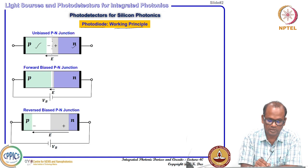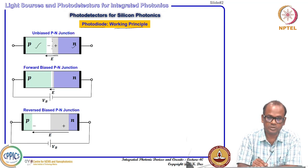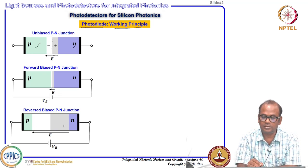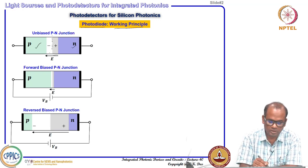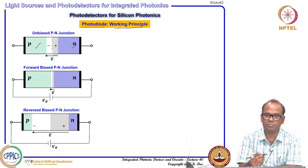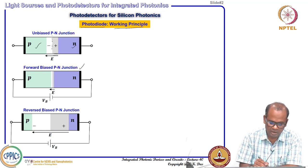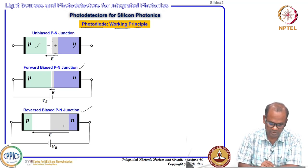Because of the space charge region, the electric field points from the positive N-side to the negative P-side. Even though both regions are charge neutral overall, the space charge region creates a built-in electric field. This field produces a built-in potential. Under forward bias, the depletion width is reduced and the electric field decreases. Under reverse bias - positive connected to N-side, negative to P-side - the depletion width widens and the electric field increases.